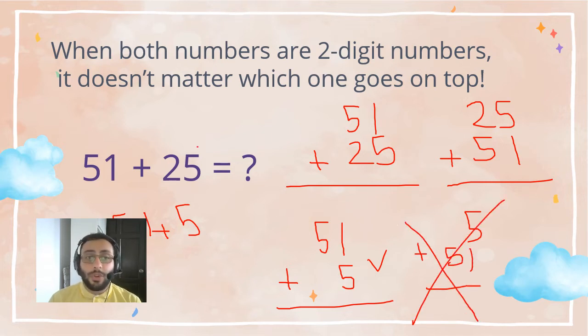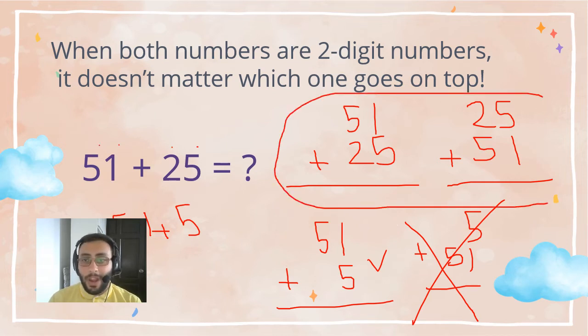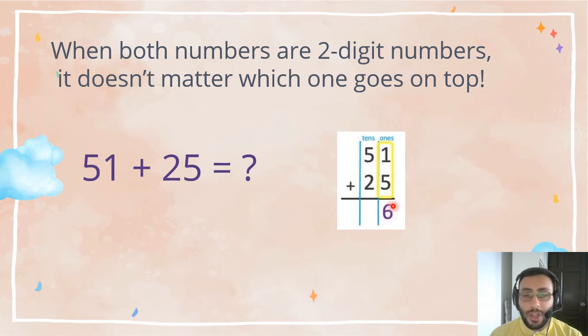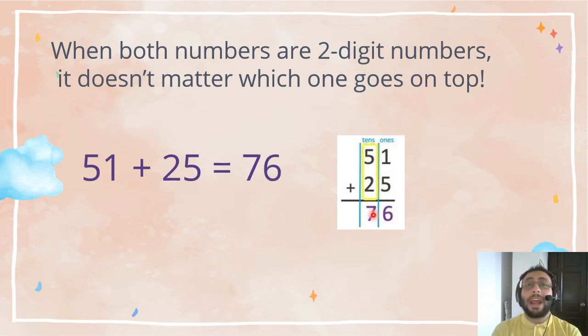But, if there are two digit numbers, you can write it in any way you like. So, 51 plus 25. As always, we start from the ones. 1 plus 5 equals 6. 5 plus 2 equals 7. So, the answer is 76. You can do it in your head, too.